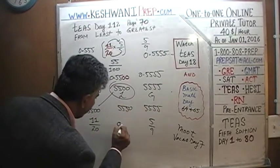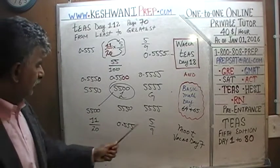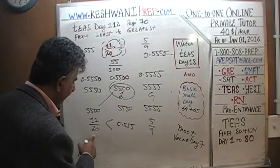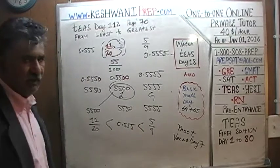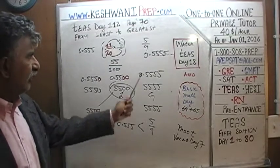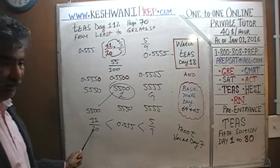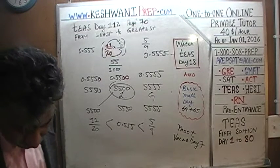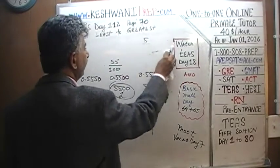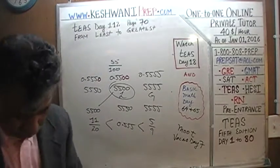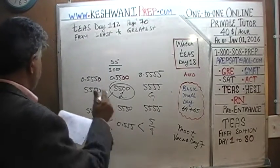We've done it — arranged from least to greatest: 11/20 is less than 0.555, which is less than 5/9, because 5/9 is 0.5 repeating forever. After the third decimal place it exceeds 0.555. Let's do one more — our third of four, then one more after that. We have 1/6.